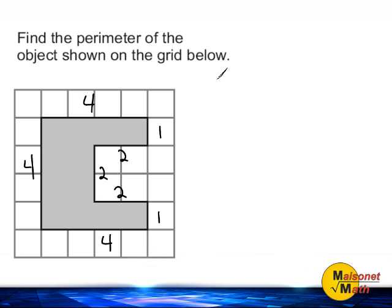We have three 4's and 3 times 4 is 12. We have three 2's and 3 times 2 is 6 and we have two 1's which gives us a sum of 2. Adding all of these numbers together, we still come up with the answer of 20 units. And that would be the perimeter of the object shown on the grid.